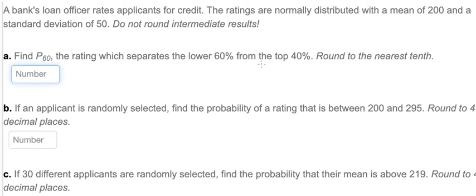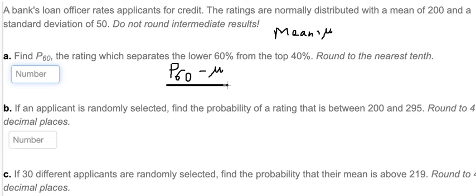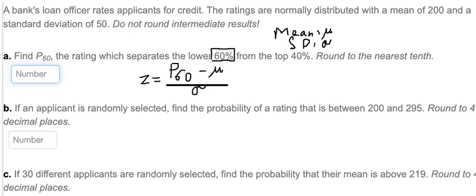I will show you how to find b60. We know that b60 is inside this formula — this involves the mean and sigma, which is the standard deviation. This equals z. The first thing we need to do is find the value of z so that we can find b60. The question asks for the rating separating the lower 60% and the top 40%, so we need to use this table.